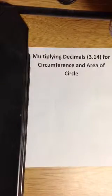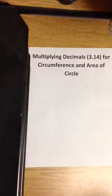How to multiply decimals, 3.14, for circumference and area of a circle.